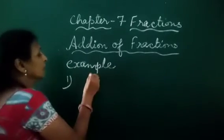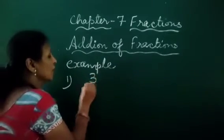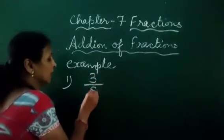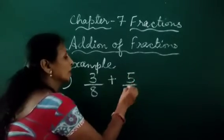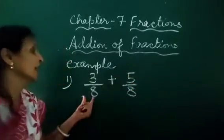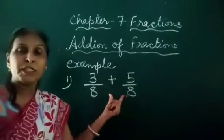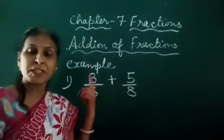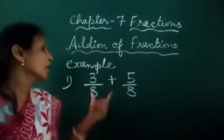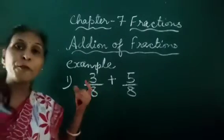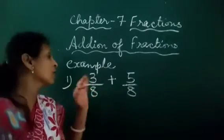Number 1: 3 upon 8 plus 5 upon 8. These two fractions are like fractions. Now how we will add it?